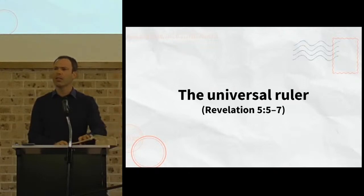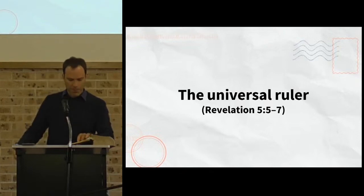But before he gets there, one of the elders, one of the 24 elders, shares the good news with John. Verse 5: Do not weep. See the line of the tribe of Judah, the root of David has triumphed. He is able to open the scroll and its seven seals.